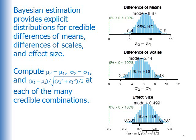Bayesian estimation provides explicit distributions for credible differences of means, differences of scales, and effect size. We compute the difference of means, the difference of the standard deviation or scale parameters, and the effect size at each of the many credible combinations. And here on the right, we see those posterior differences of means, differences of scales, and the effect size.